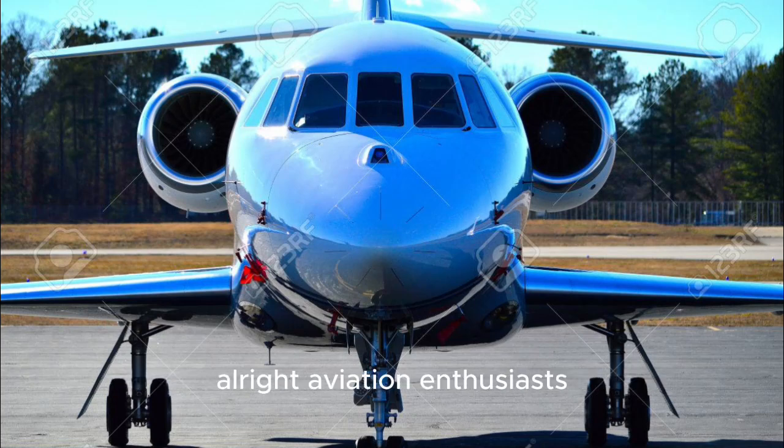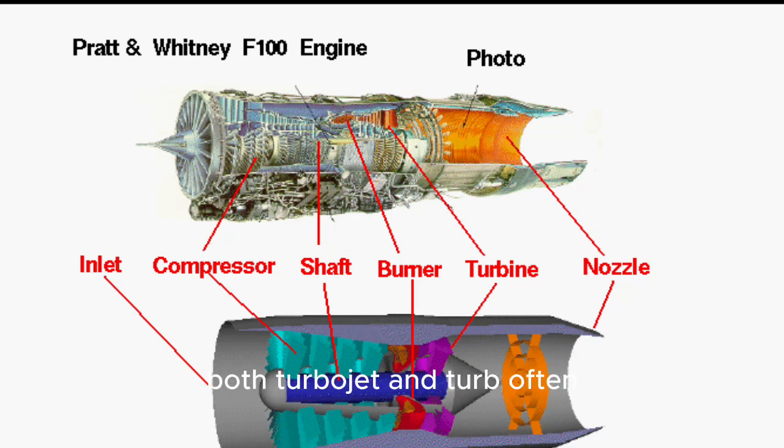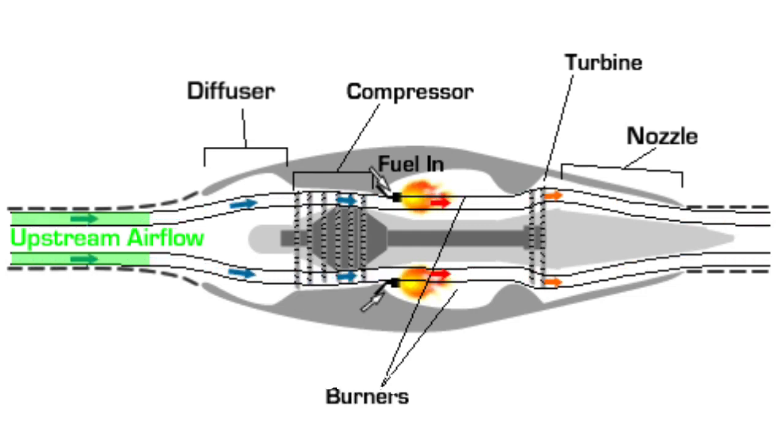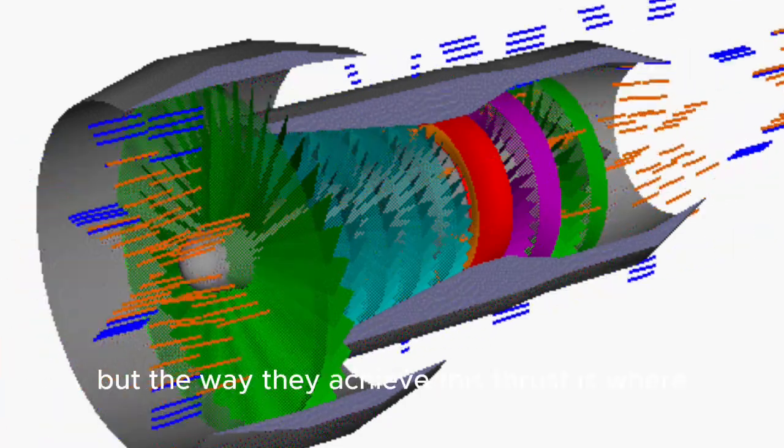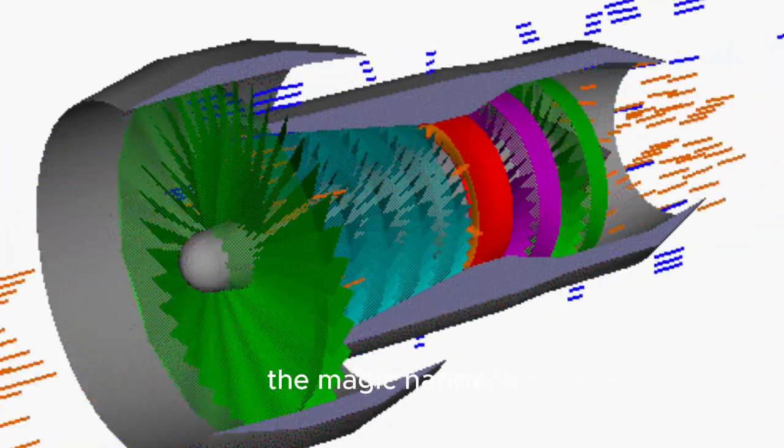Alright, aviation enthusiasts, let's start with the basics. Both turbojet and turbofan engines are the powerhouses behind the incredible speed and efficiency of modern aircraft. At their core, they both work on the principle of jet propulsion, but the way they achieve this thrust is where the magic happens.